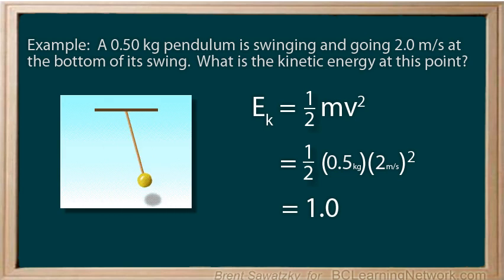We confirm that our units are standard units. Kilogram for mass? Yep. And meters per second for velocity? Yep. So, we know that our answer must be in joules. Perfect. The pendulum has a kinetic energy of one joule at the bottom of its swing.